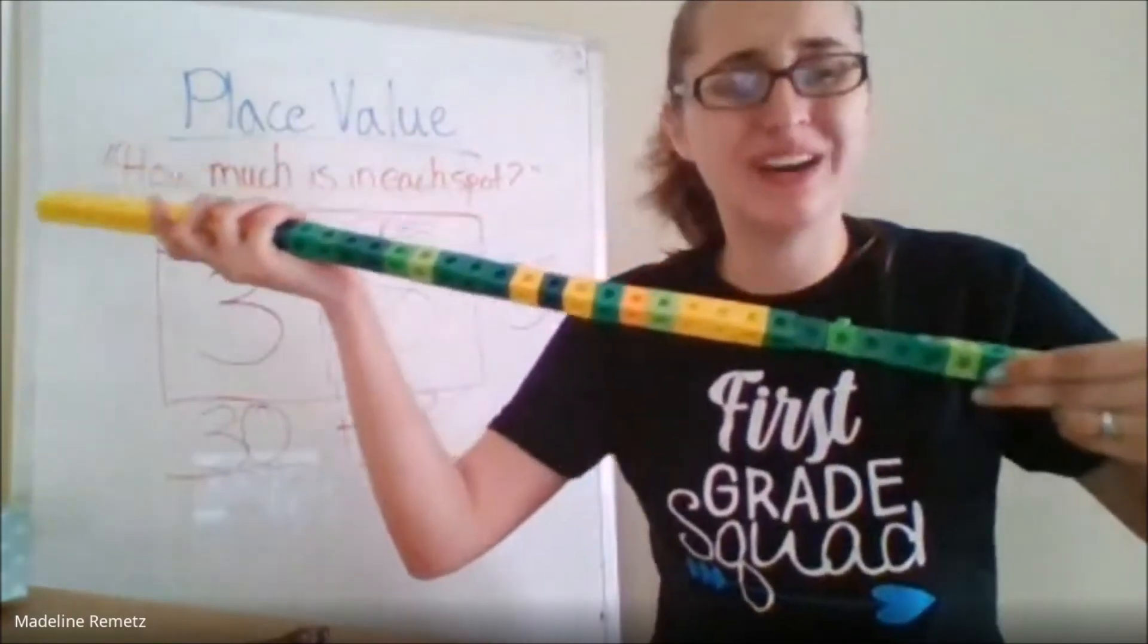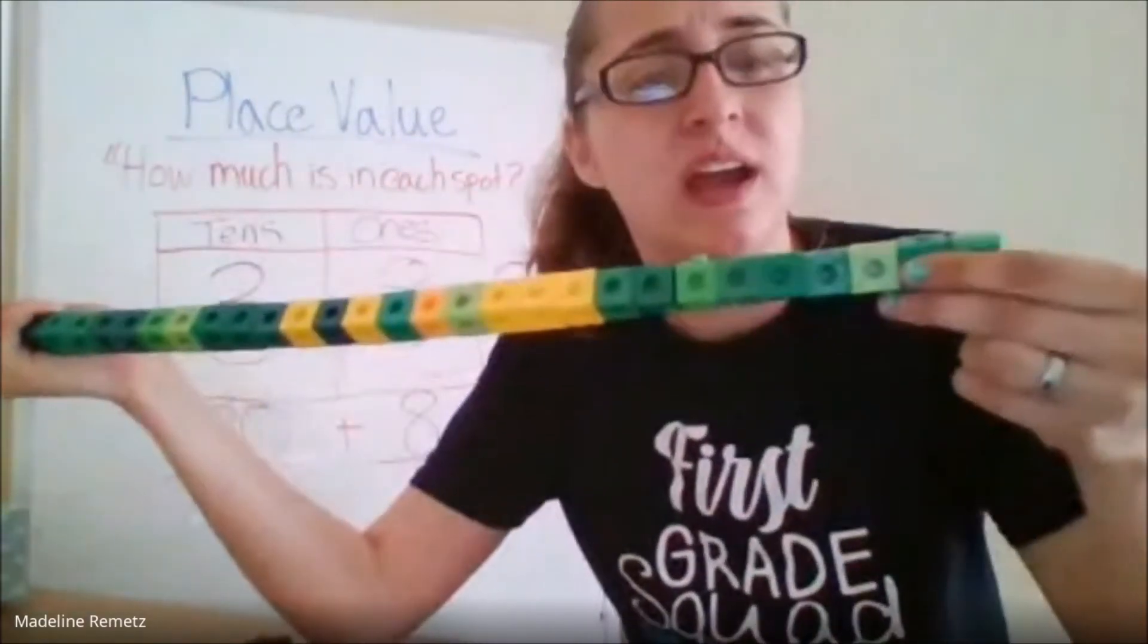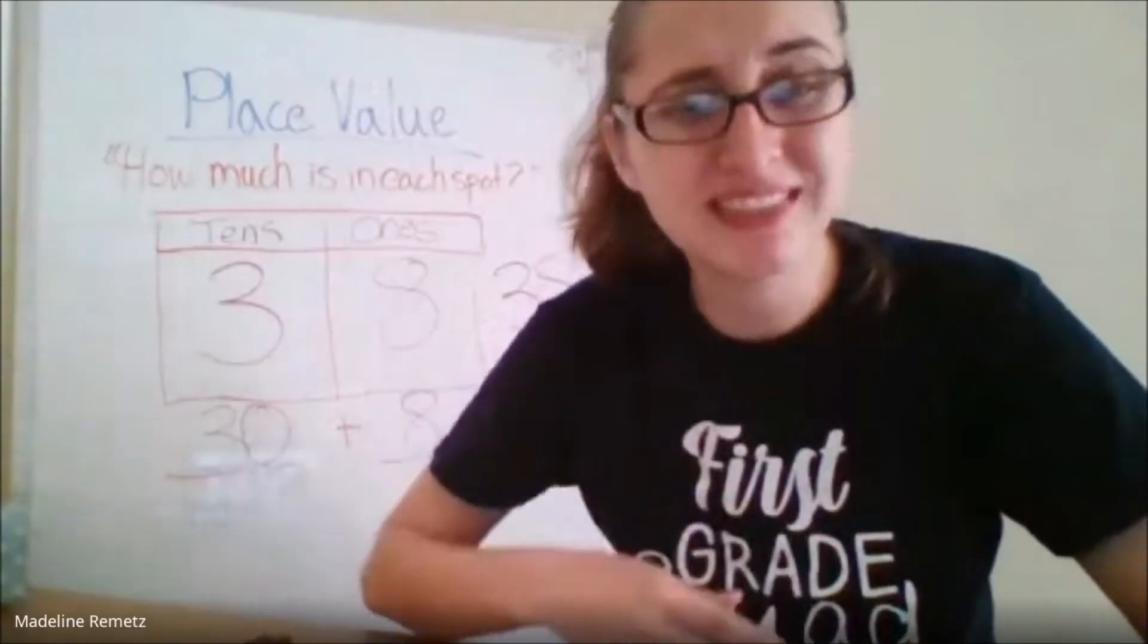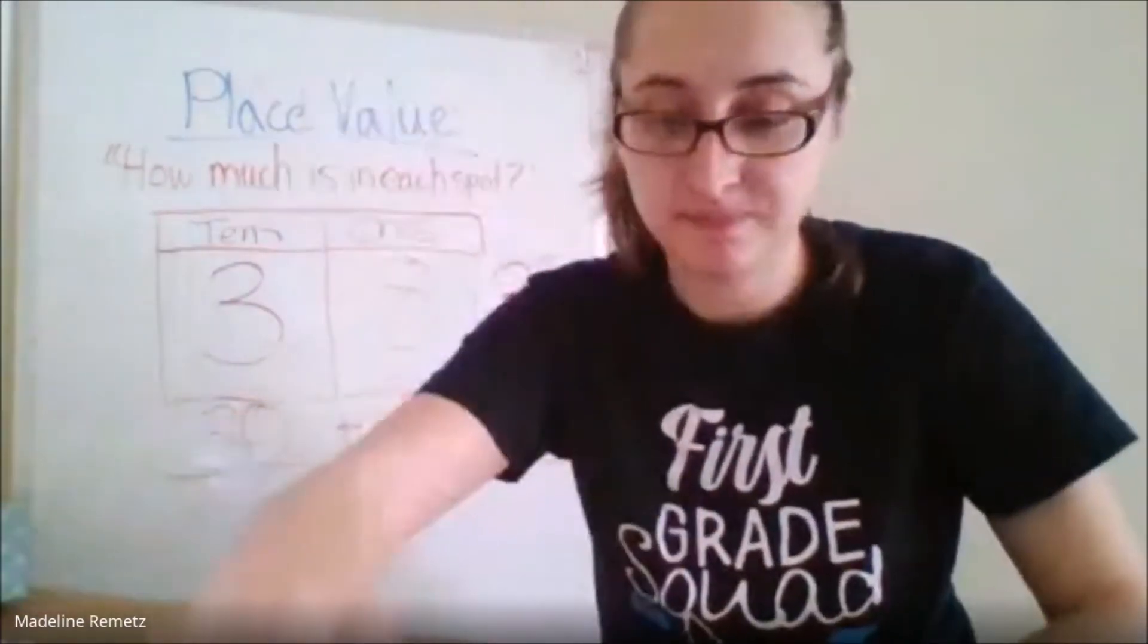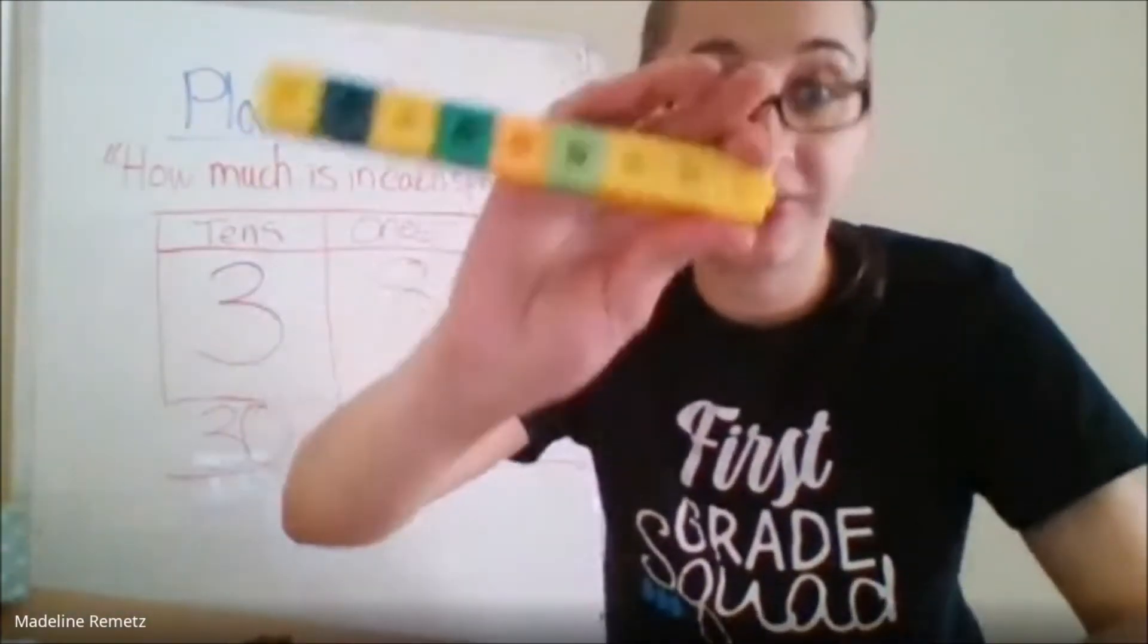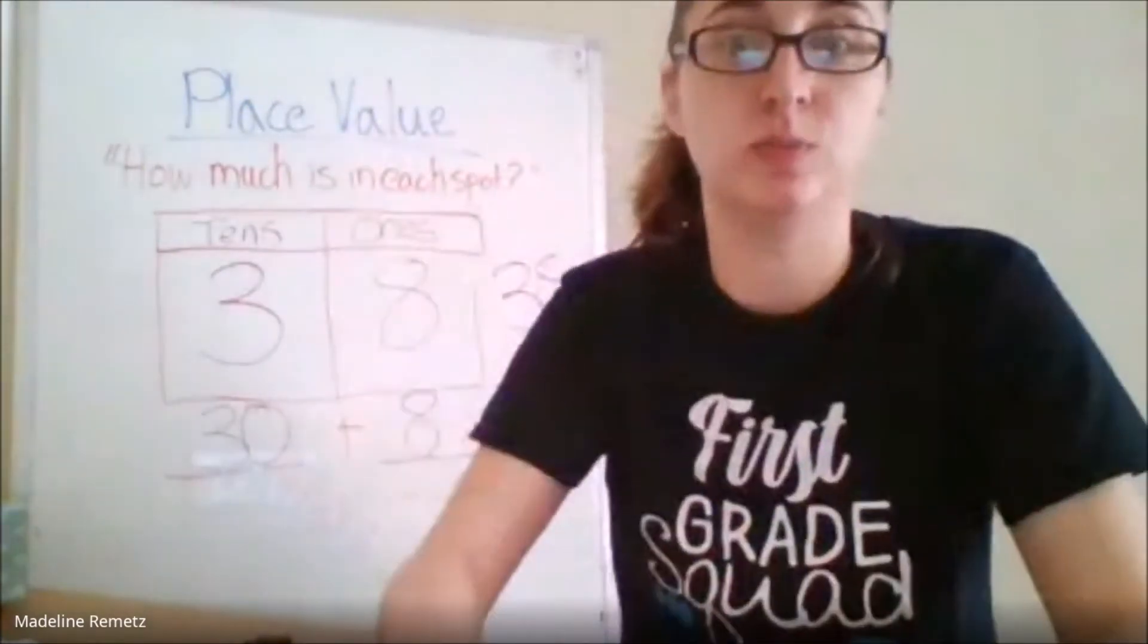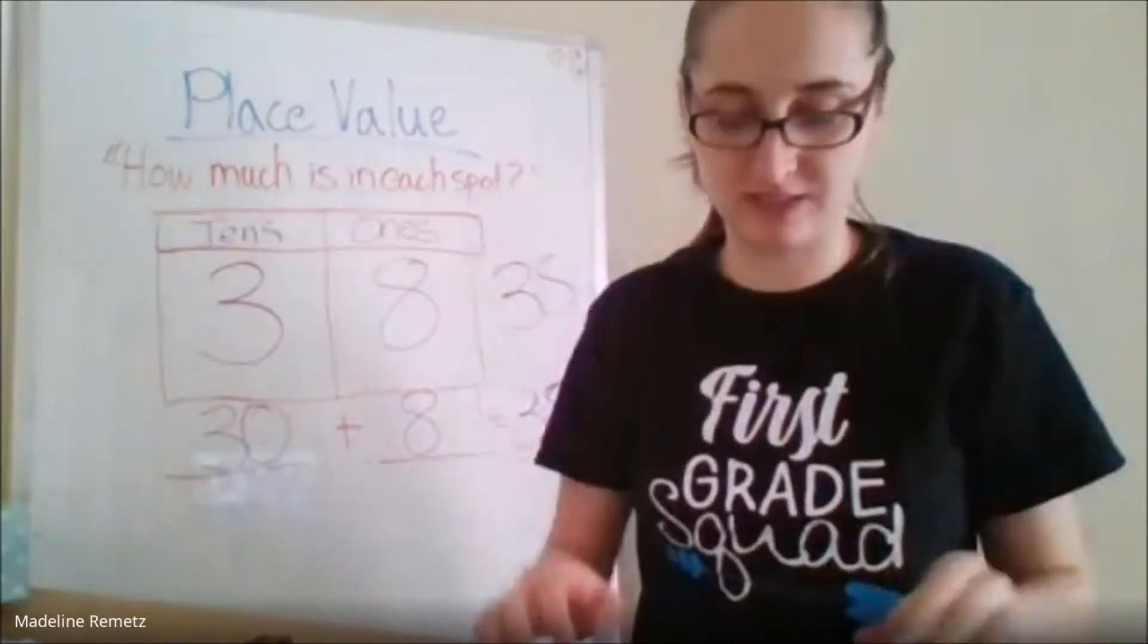And so if you wanted, you could spend all day trying to count every single one of these cubes. But no, we don't have time for that! That's insane! So instead, we'd count the tens. Ten, twenty, thirty. And then we go count my last eight cubes. That way we kind of fast-forward through it all. So that's the awesome part of place value.